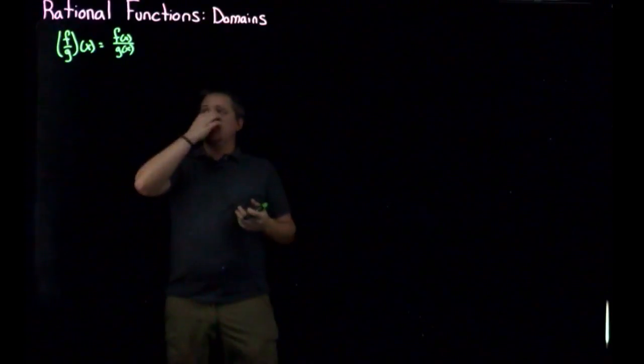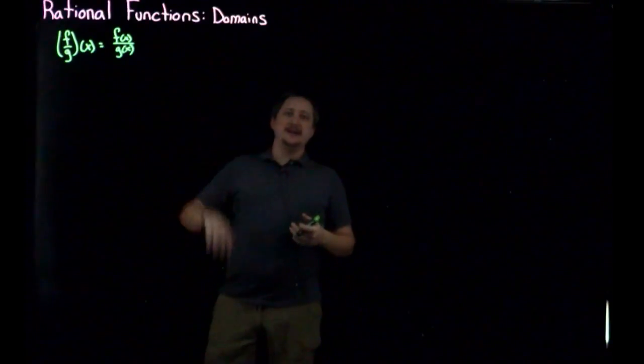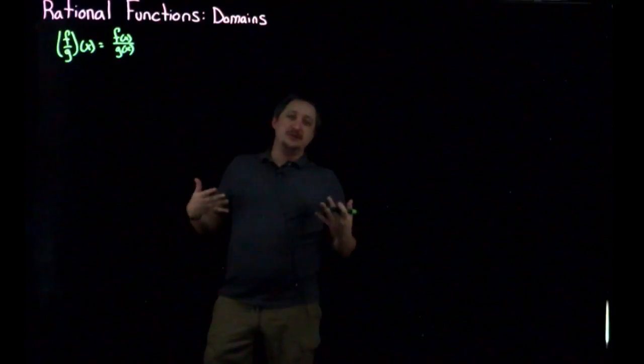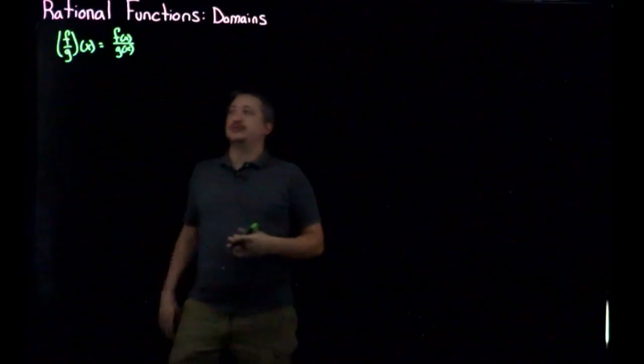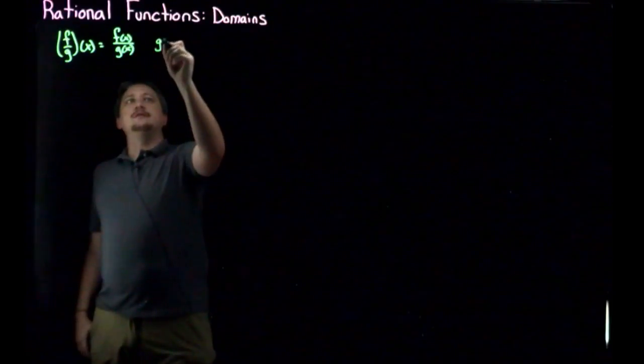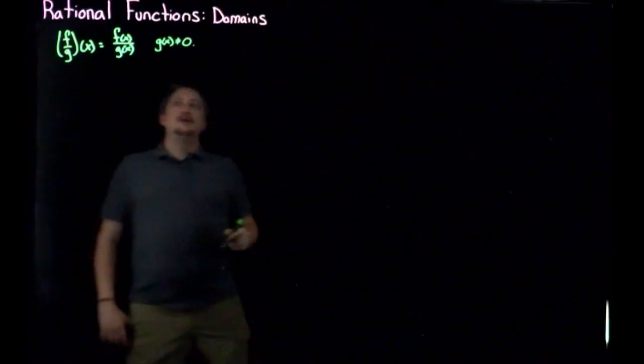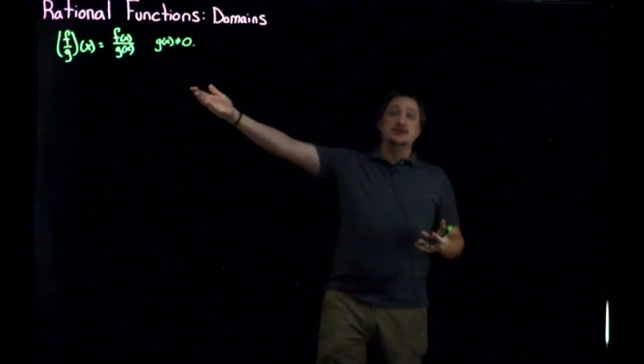If you remember when we had this definition, there was one caveat that we had to add in. Everything works the way you would think except division has one little extra rule, which is that here g of x cannot be zero. Which makes sense, right? Because we don't want to divide by zero.